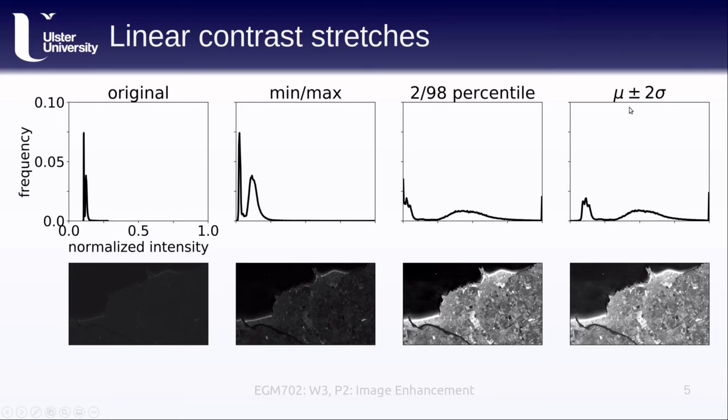Similarly, we can take the mean value of the original image, add plus or minus 2 sigma, so 2 plus or minus 2 times the standard deviation, which will cover 95 percent of the values in the original image. And you can see what that looks like here.